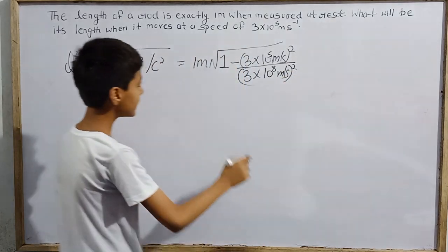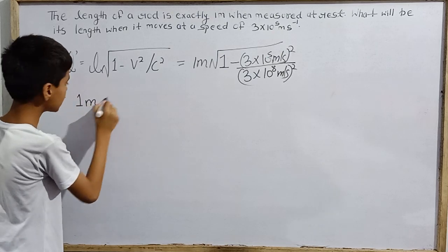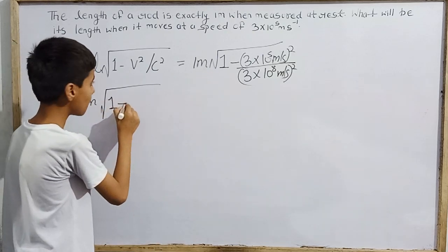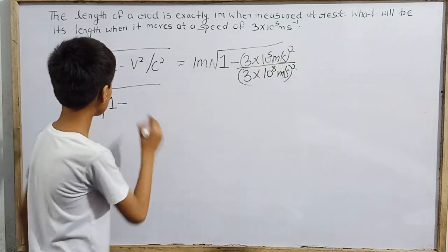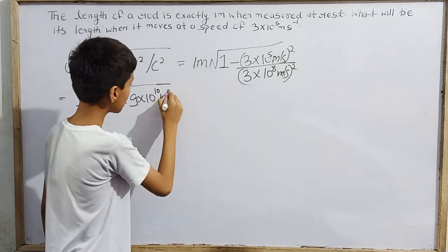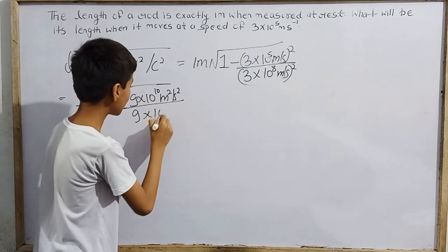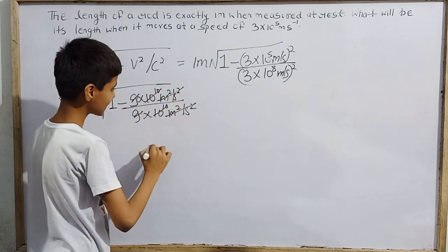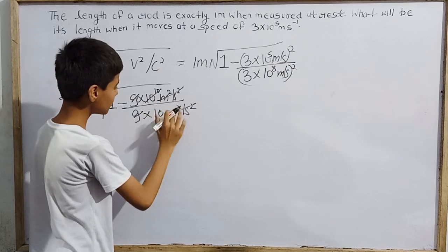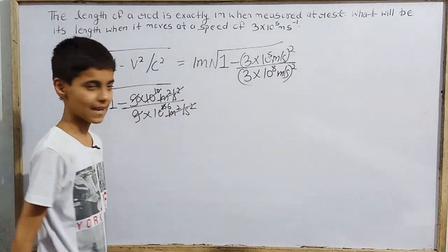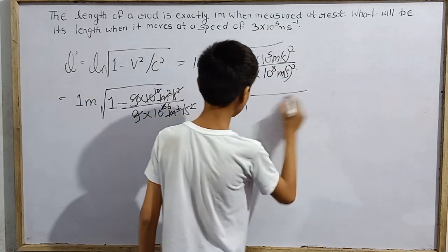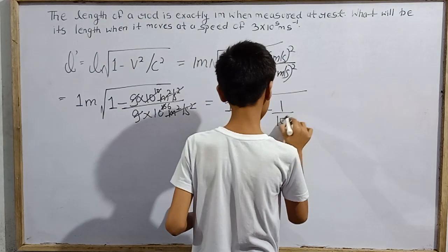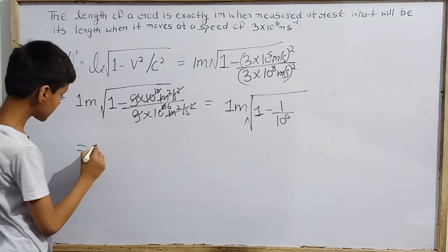Evaluating the fraction: (3×10⁵)² = 9×10¹⁰ and (3×10⁸)² = 9×10¹⁶. The 9's cancel, leaving 10¹⁰/10¹⁶ = 1/10⁶. So L' = 1 meter × √(1 - 1/10⁶).